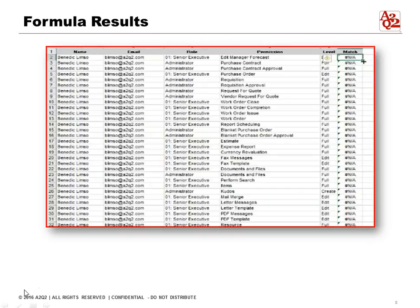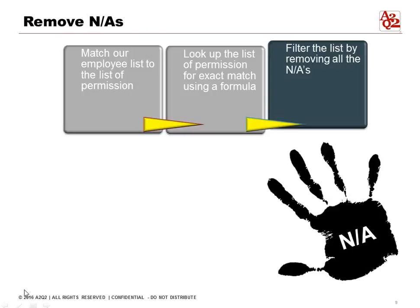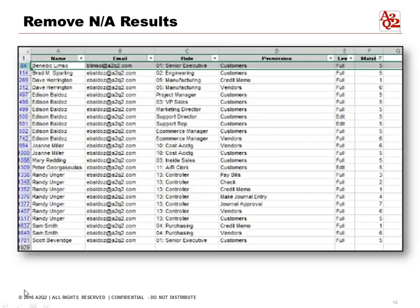After entering the formula it will give us a list something like this. The next step is to remove all the N/As — we're going to filter for those. In our Excel spreadsheet you will filter, and these are all the employees who have permissions to create, edit, or full, which can be found in the SOD rule set.